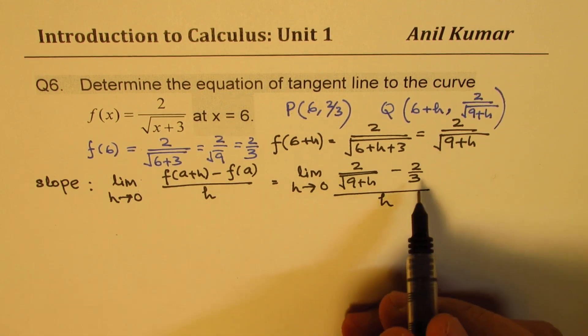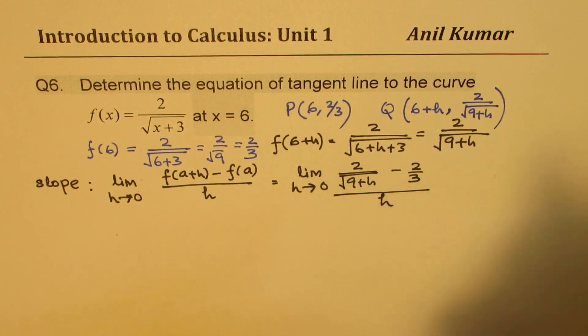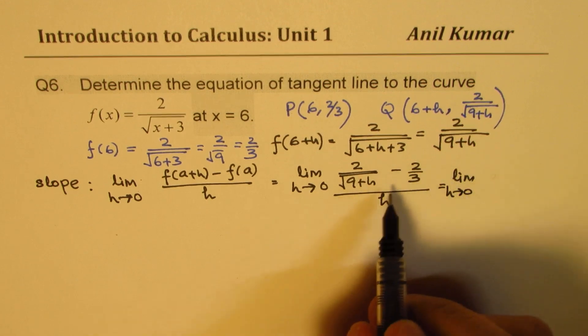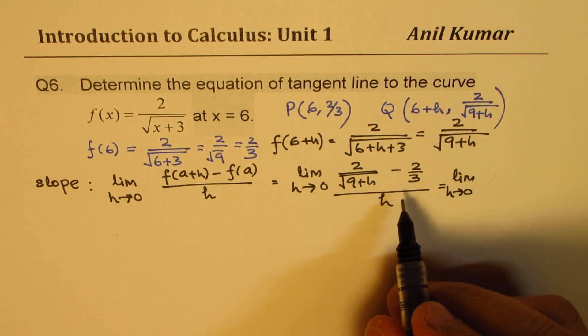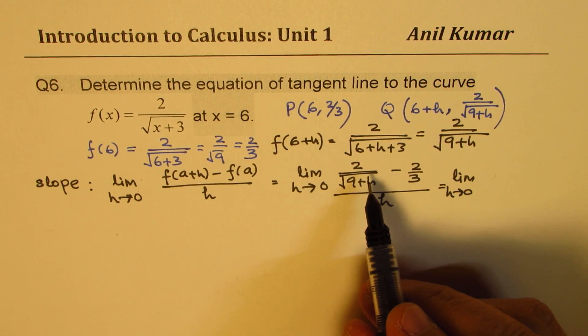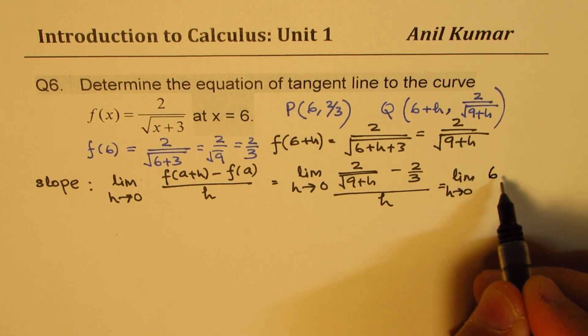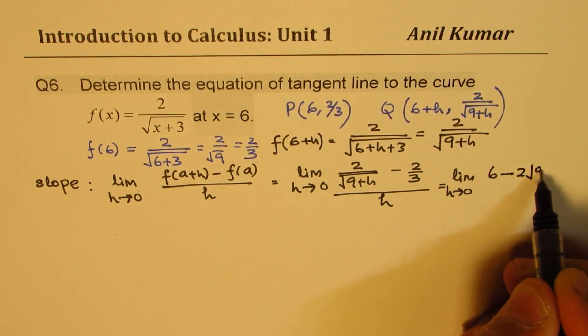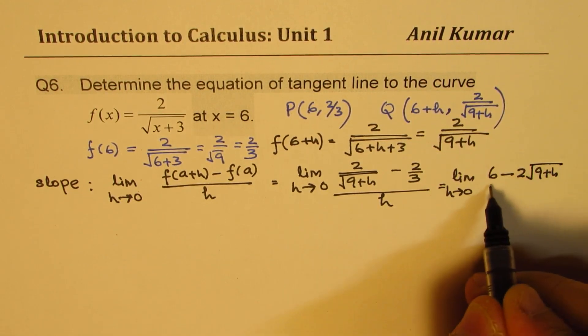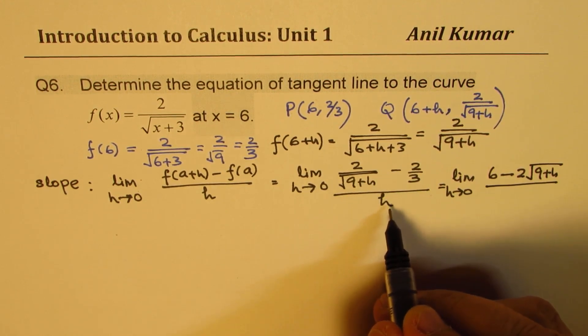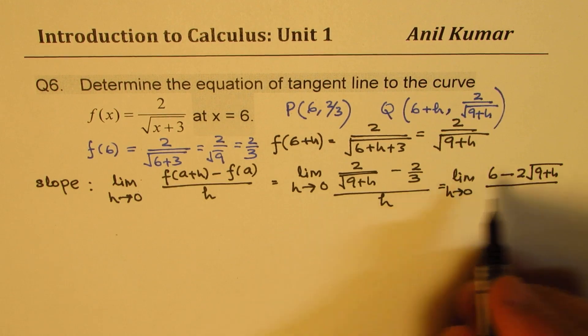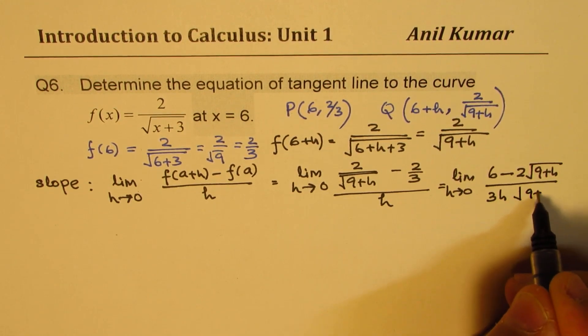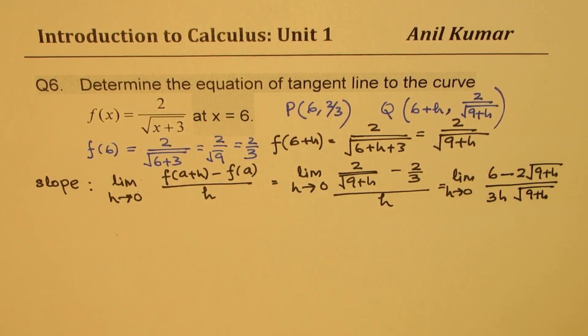Now to find this limit, let's cross multiply and simplify this particular expression. So we get this as limit h approaches 0, and when you cross multiply, you get 2 times 3 as 6. So we could write this as (6 - 2√(9+h)) over, all this comes in the denominator: 3h√(9+h). Does it make sense to you?